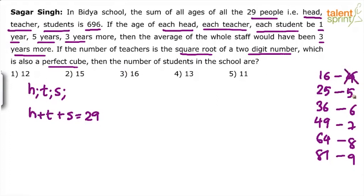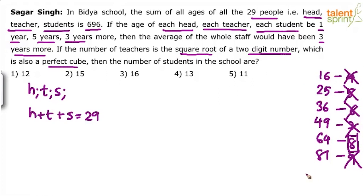Is 4 a perfect cube? No. Is 5 a perfect cube? No. Is 6 a perfect cube? No. Is 7 a perfect cube? No. Is 8 a perfect cube? Yes, 8 is a perfect cube. Is 9 a perfect cube? No. So the number of teachers is 8 — square root of the 2-digit number 64, which is also a perfect cube. So T equals 8.